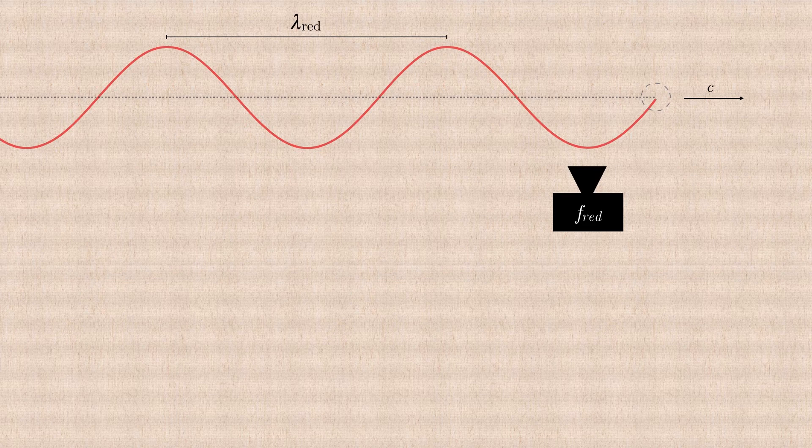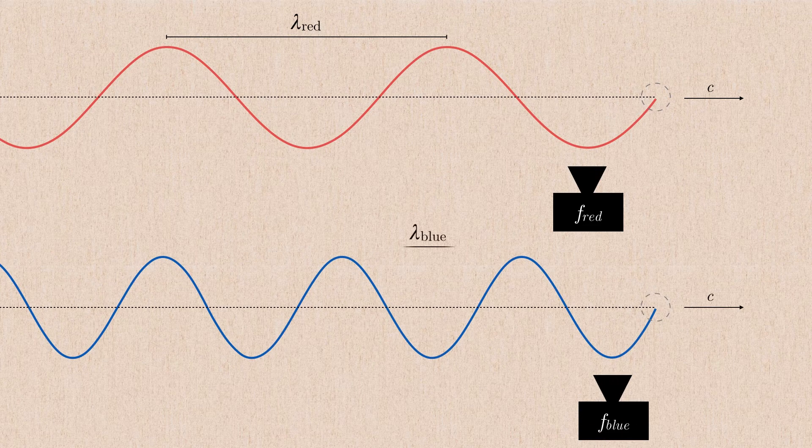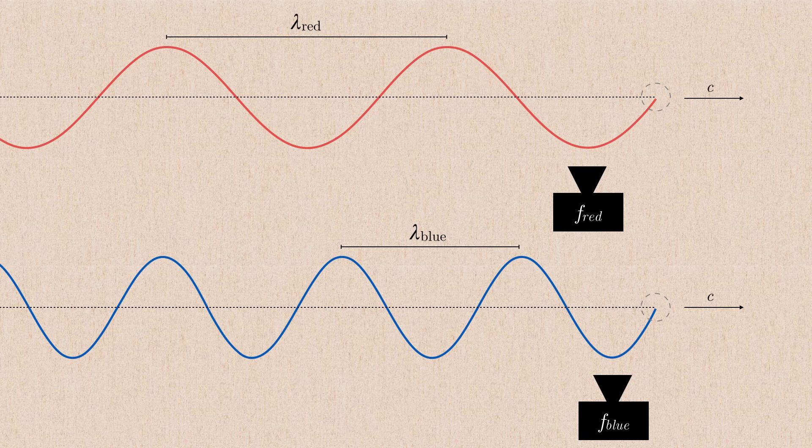Now, suppose we had, in addition to our red photon or our red light wave, we introduce a second light wave, this one's blue. If we bring our detector to measure the frequency of the blue light wave, you can imagine that since they're both traveling through space at the speed of light, we're going to count more of the blue wave cycles every second.